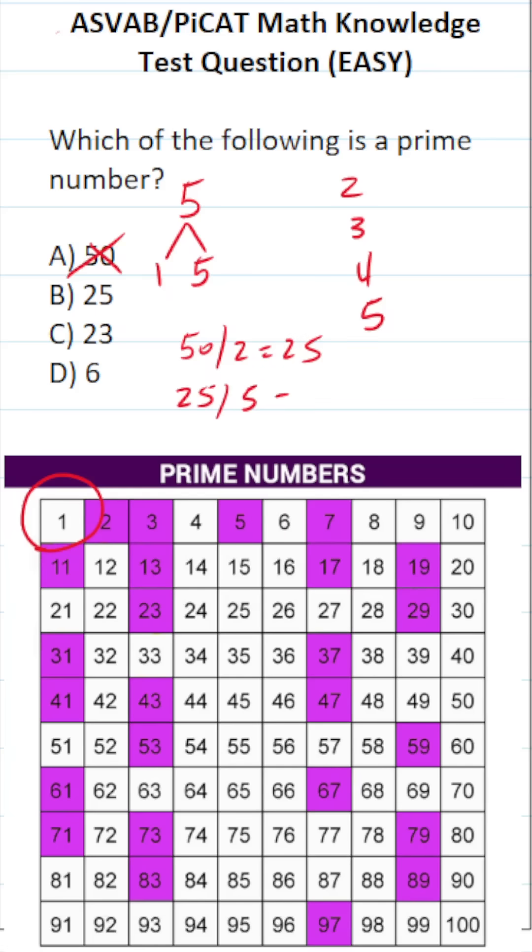25 is divisible by 5. 25 divided by 5 is 5. Therefore, it can't be prime.